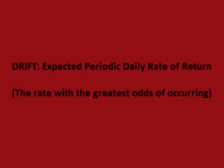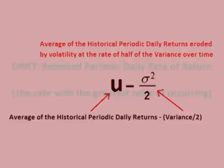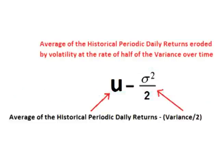For the drift, we use the expected rate of return — in other words, the rate that we expect the price to change each day. The expected rate is the rate of change with the greatest odds of occurring. For a standard Monte Carlo, we use a volatility-eroded historical mean of the periodic daily returns.